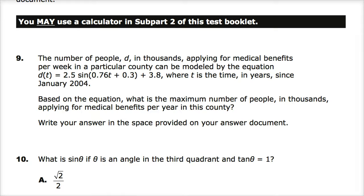The number of people in thousands applying for medical benefits per week in a particular county can be modeled by the equation d of t equals 2.5 sine times the quantity 0.76t plus 0.3 plus 3.8, where t is time in years since January 2004. Based on the equation, what is the maximum number of people in thousands?